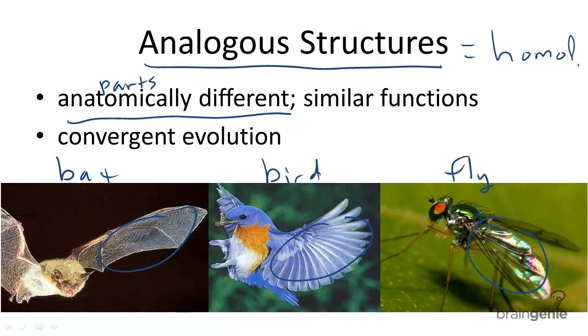These organisms' wings are analogous, because although they have different anatomies, their functionality, or their physiology, is similar. So they have similar purpose. For example, they can all fly.